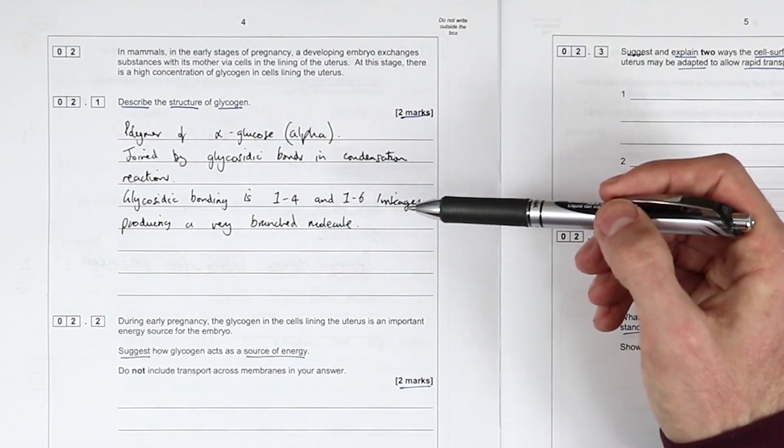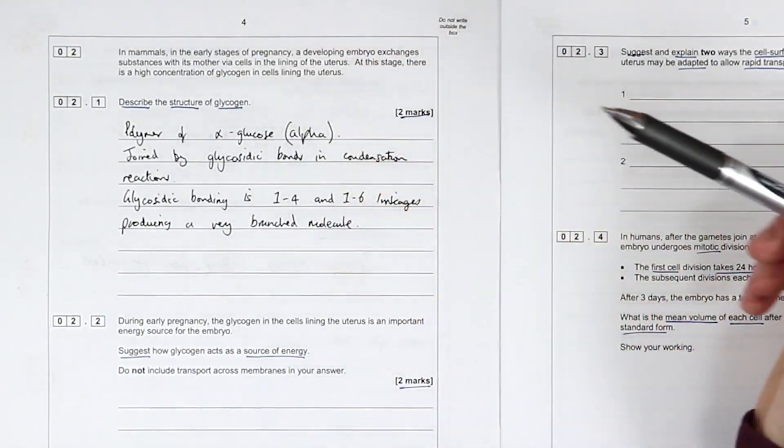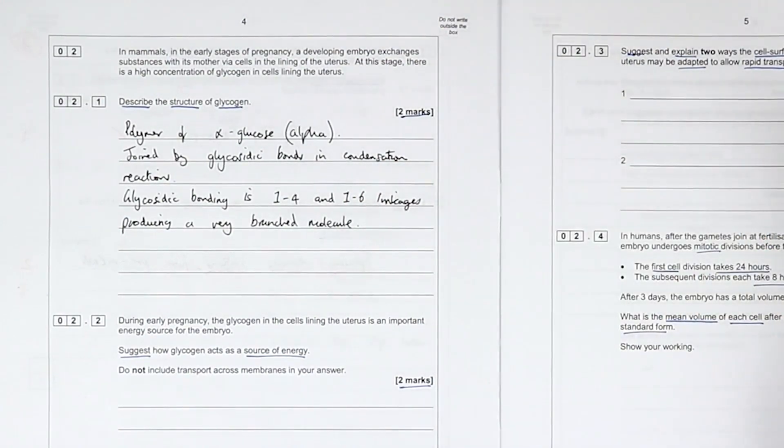I think that's loads for two marks. To be honest, I could go on. I don't think we could say about why it's branched, but that would be linking it to its function. This question is all about the structure. This is good enough.